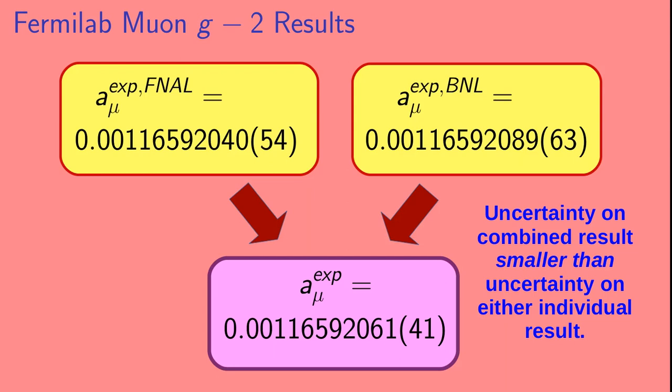The individual results had uncertainties in the last two digits of 54 and 63, respectively. The uncertainty on the combined result is 41 in the last two digits.